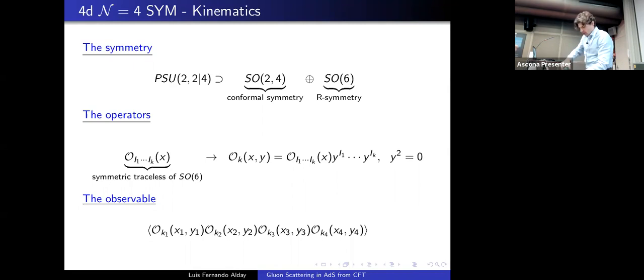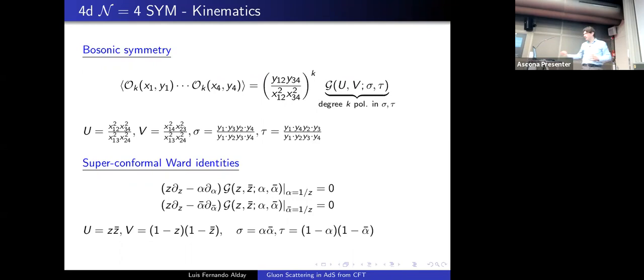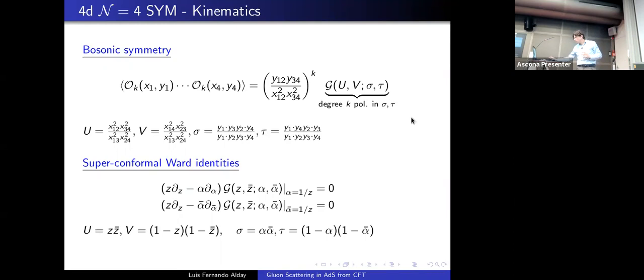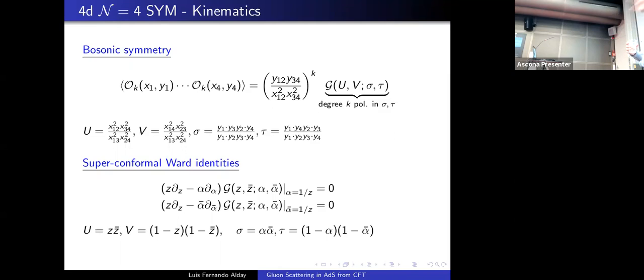We consider four-point correlators of the operator O(x, y). The bosonic symmetry implies constraints telling us that this four-point correlator, up to a prefactor, is a function of two spacetime cross ratios u and v, and two R-symmetry cross ratios σ and τ. In σ and τ, this correlator is simply a degree-k polynomial in these two variables. In general, the u,v dependence is a complete mess.